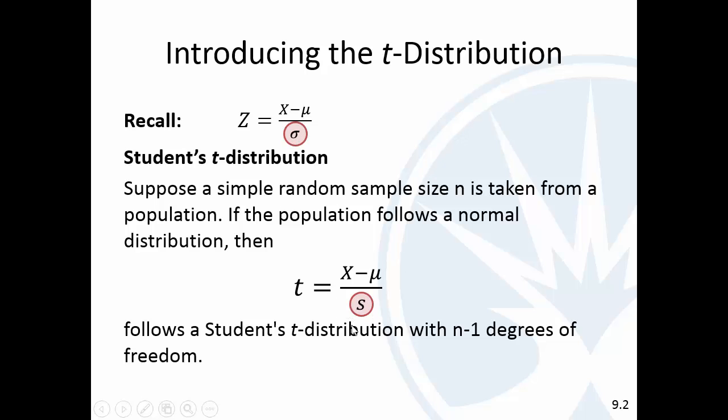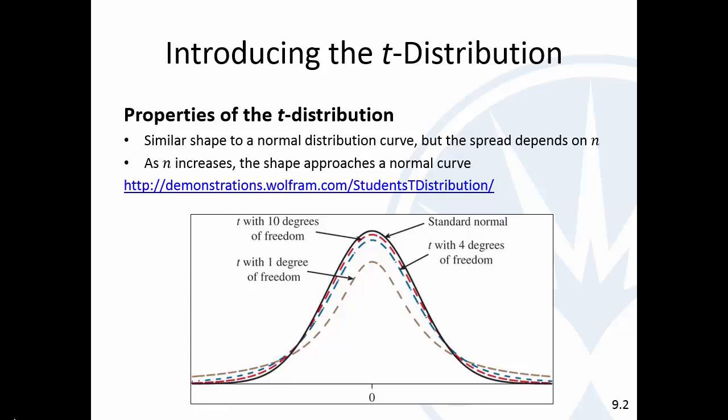If I have a sample size of two, which is just a couple of people, boy, that standard deviation could really vary. And so, there's a lot more uncertainty in this t with a small sample size. So, very similar to the normal. It's symmetric, but it has a little more uncertainty. And so, it's going to add some uncertainty into our confidence intervals and make them a little bit wider to get the same degree of confidence.